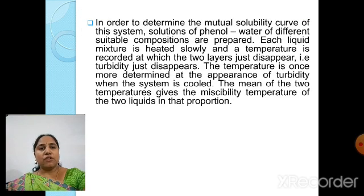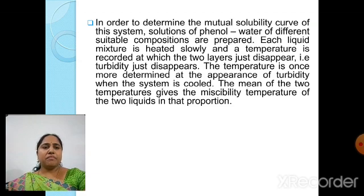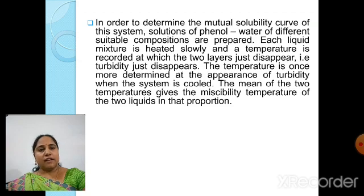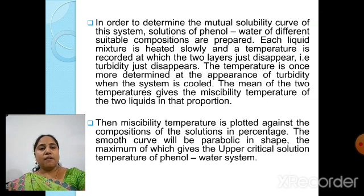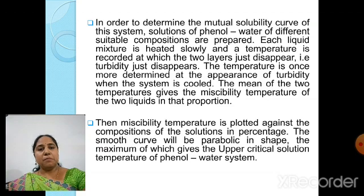To determine the mutual solubility curve, solutions of phenol-water of different compositions are prepared — typically 10%, 20%, 30% up to 100% by percentage of phenol. Each liquid mixture is heated slowly and the temperature is recorded at which the two layers just disappear. The temperature is then determined again at the appearance of turbidity when the system is cooled. The mean of the two temperatures gives the miscibility temperature for that proportion. Miscibility temperature is then plotted against composition in percentage, giving a parabolic curve whose maximum gives the upper critical solution temperature.